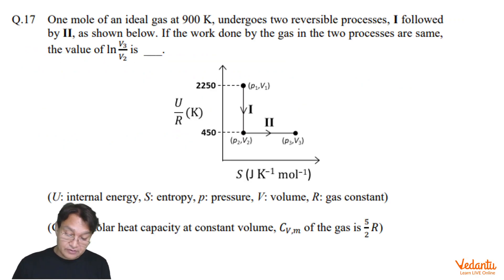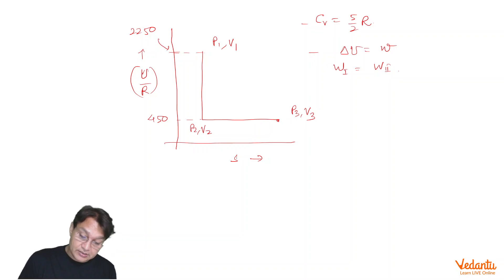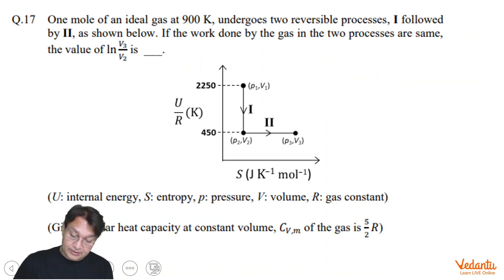Now here is a very interesting question of thermodynamics. One mole of an ideal monatomic gas at 900 Kelvin temperature initially was subjected to this kind of process in which it has taken from P1V1 to P2V2 in process 1, and then from P2V2 to P3V3 in process 2. Both processes are reversible, paths are well defined as shown in the figure. Work done in both processes are same, but the strange thing is that U by R is given on the y-axis and S is given on the x-axis. At the moment it seems to be a difficult question.